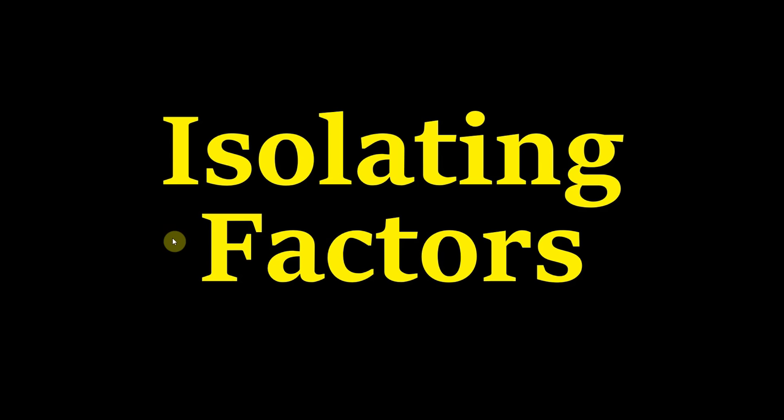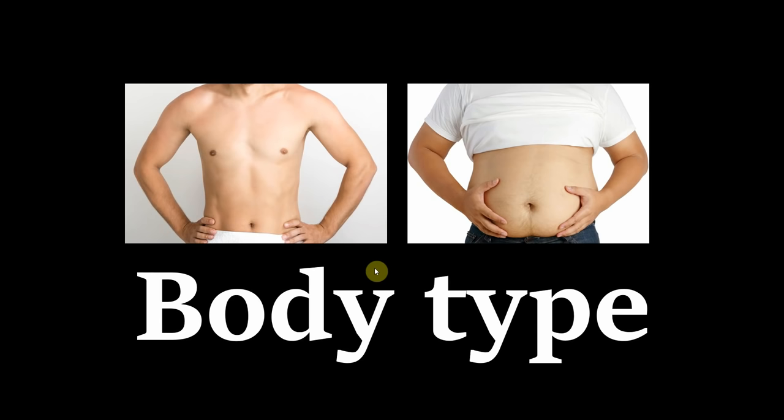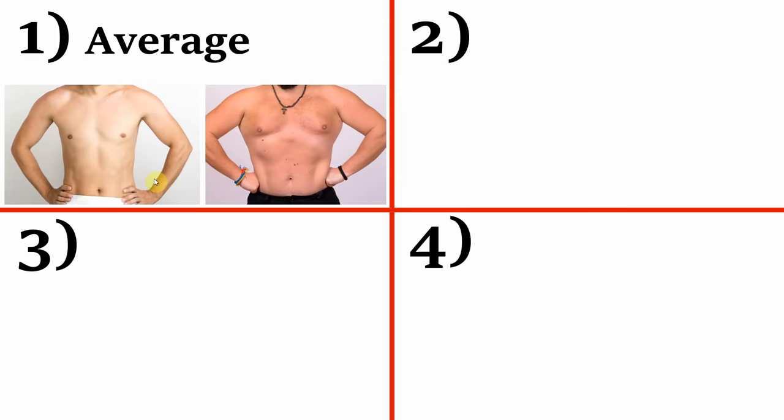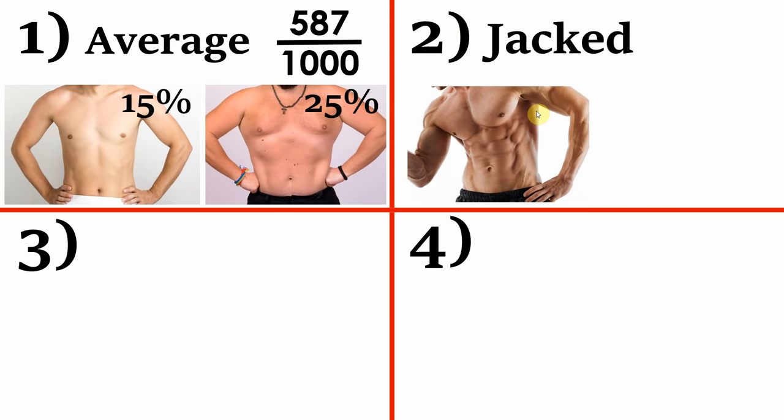Okay, now moving on to the most interesting part of the video. We're now going to isolate different factors to see how each of them affect your looks. We'll start with body type. I categorised all 1000 guys into 4 distinct groups. 1. Average build. This means anyone who has a normal frame, and a body fat percentage of around 15% on the low end, and at most 25% on the high end. 587 people fell into this bracket out of 1000. 2. Jacked. Meaning anyone who's visibly muscular, has a clear six pack, fairly large shoulders and arms,